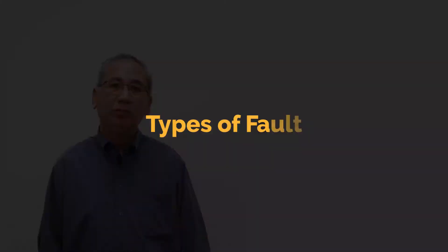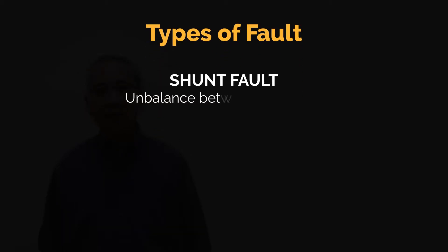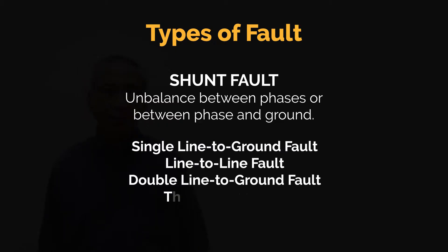First, we need to discuss the different types of fault: shunt fault and the series fault. What is a shunt fault? Unbalance between phases or between phase and ground, and this can either be a single line-to-ground fault, a line-to-line fault, a double line-to-ground fault, and a three-phase fault.